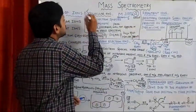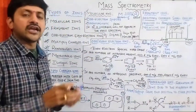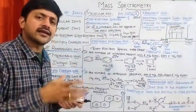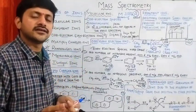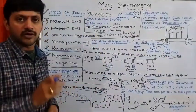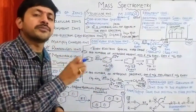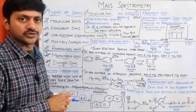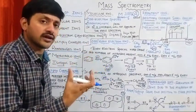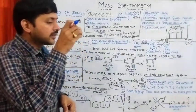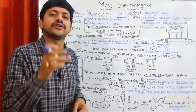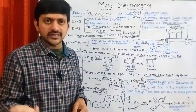This is an odd electron species, which has radical character. Radical character means it has a paramagnetic nature. So molecular ions are of paramagnetic nature. As discussed in the last video, the m/z value of the molecular ion is always equal to the molecular weight of the compound.